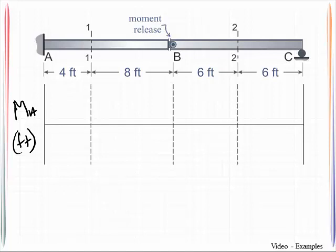Since we are looking for the moment at A, I am going to insert a moment release at point A. Then I am going to sketch arrows on this that indicate a positive rotation.